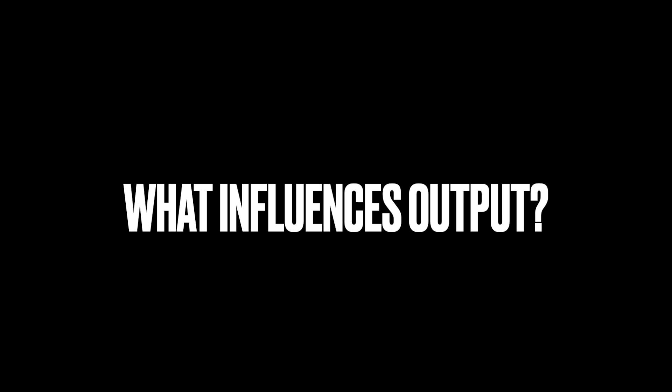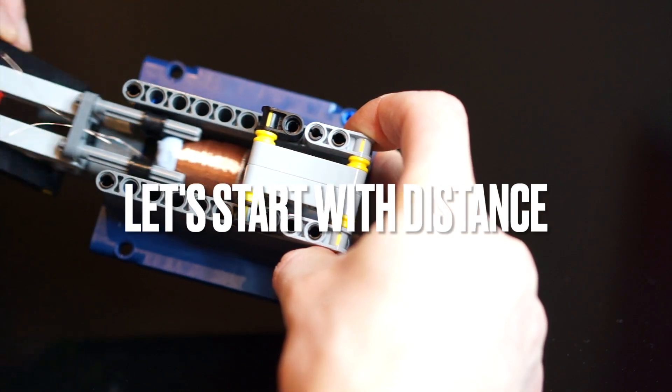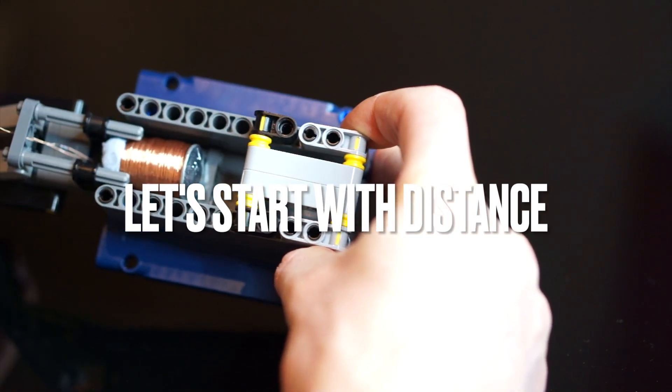So let's see how the setup performs and how the different factors influence the generators output. To start with let's take a look at the effect that distance of the magnet from the coil has on the output.